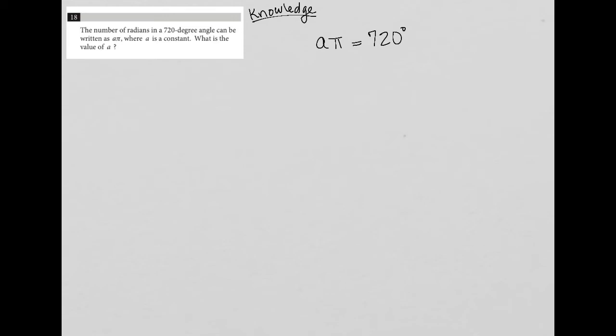What we need to know, or what you should know, hopefully you know, is that pi is equal to 180 degrees. That is the relationship between radians and degrees.